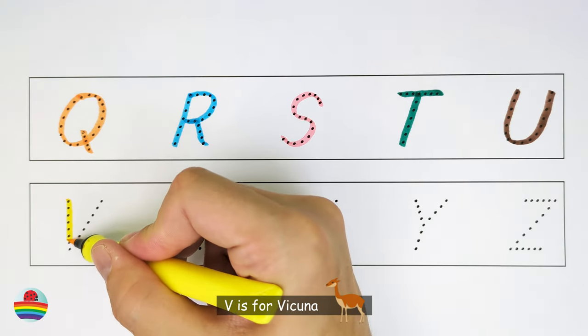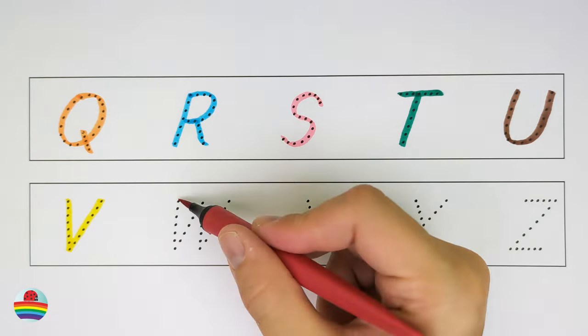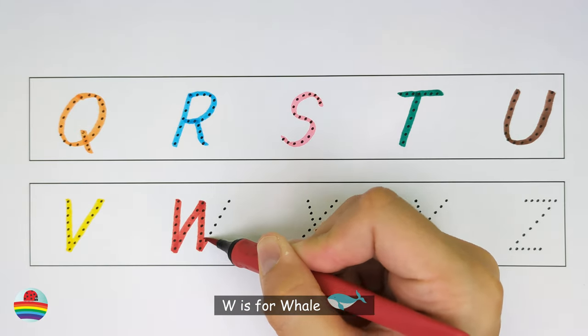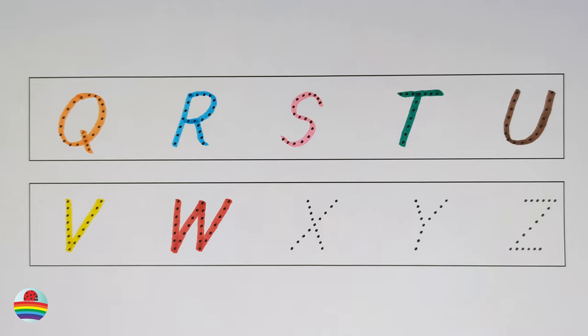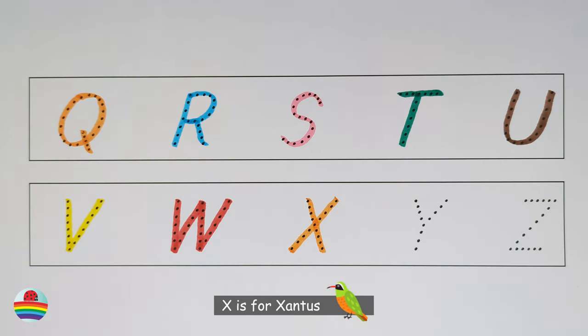V. V is for vicuna. W. W is for whale. X. X is for xantis.